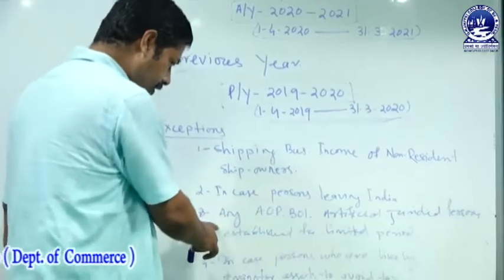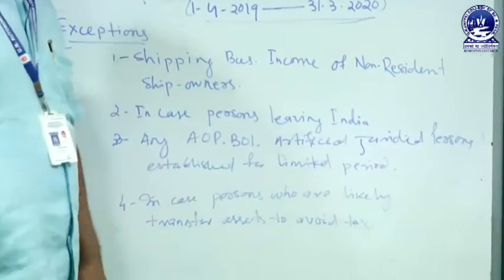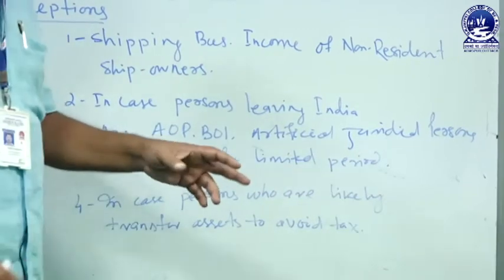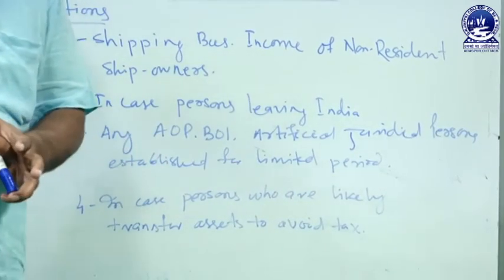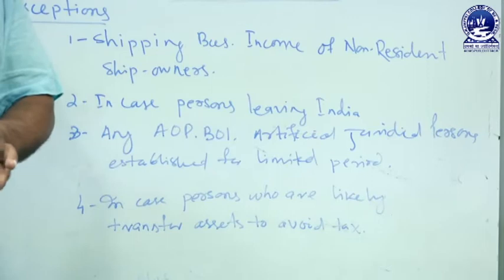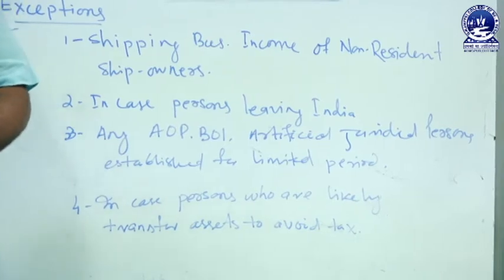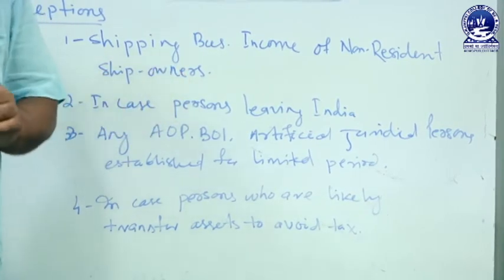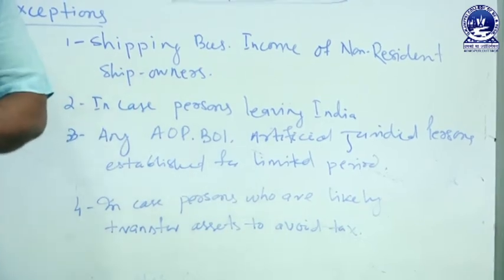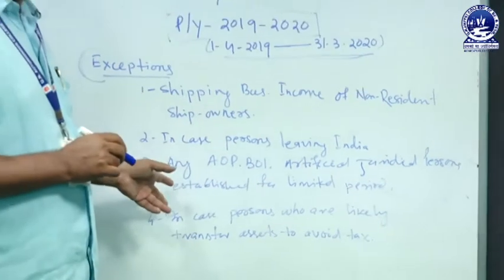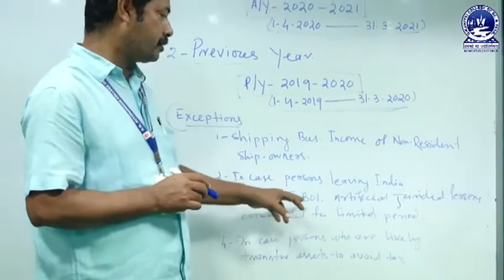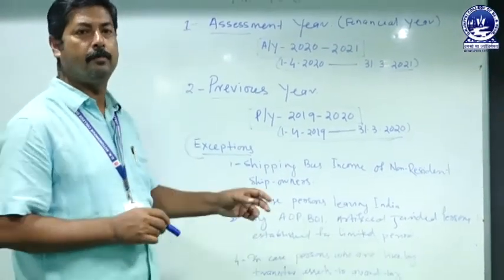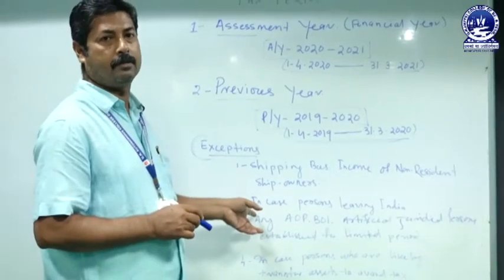The third exceptional case: any association of persons, body of individuals, or artificial juridical person established for a limited period or for the completion of a specific event. After the limited period or event is completed, the association of persons, body of individuals, or artificial juridical person is liable to pay the tax in that same period.